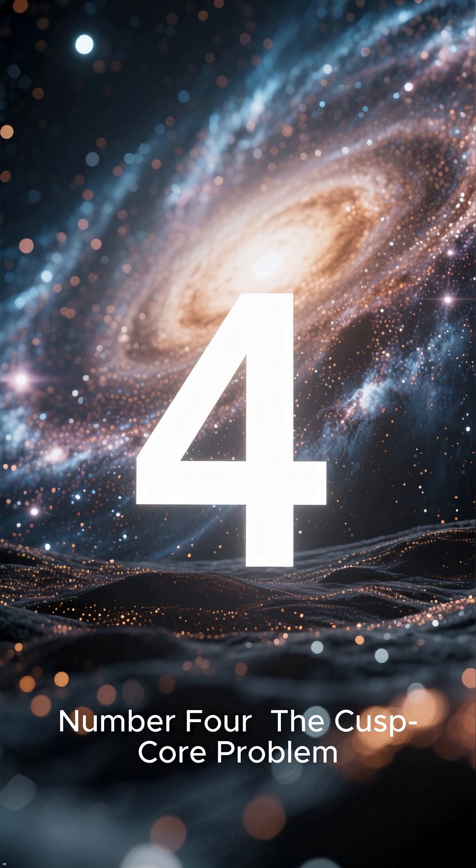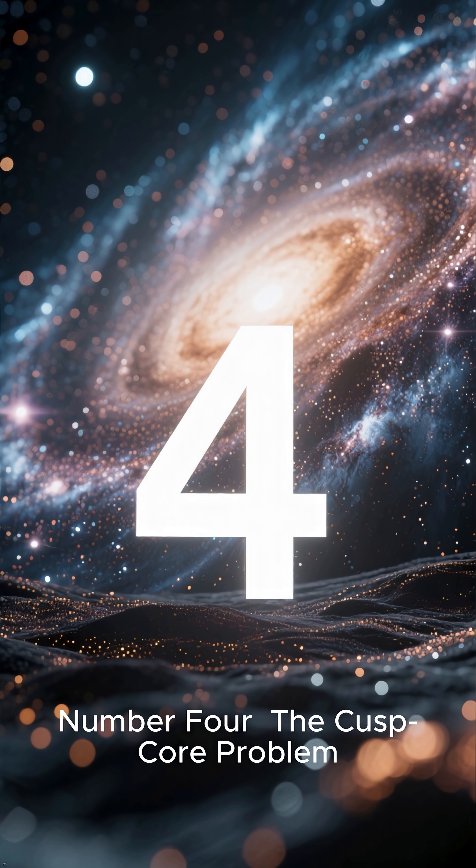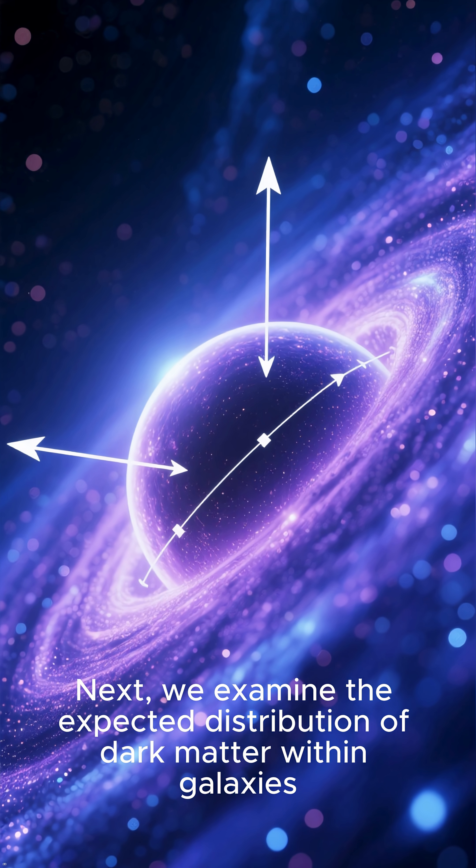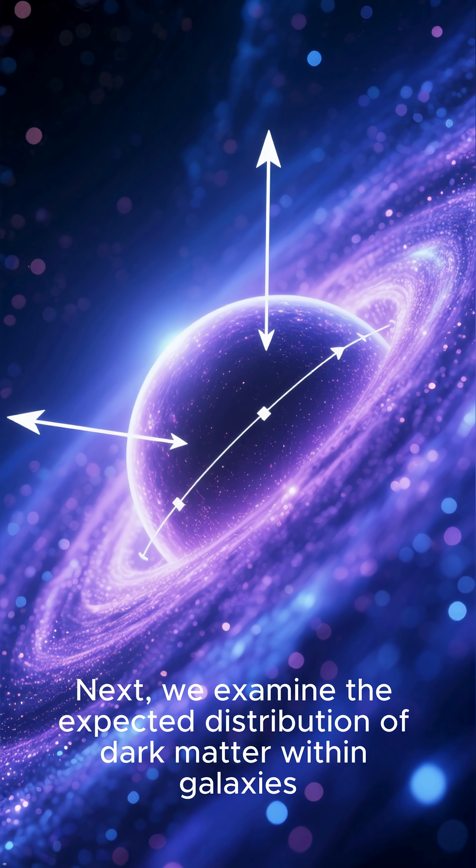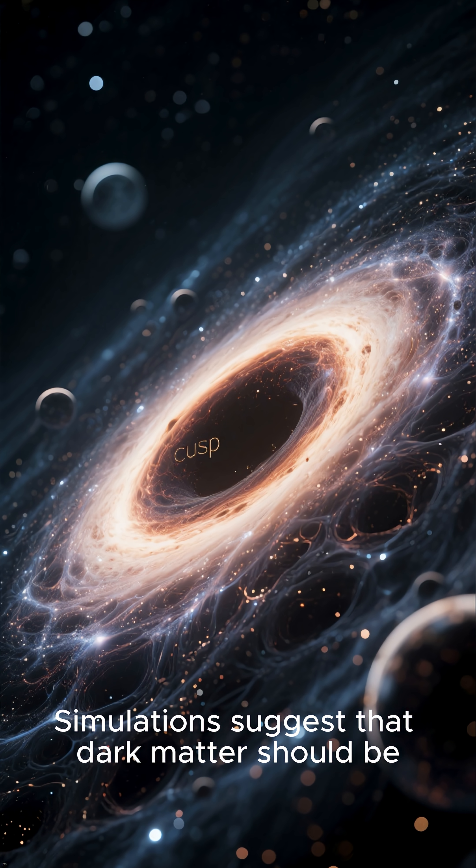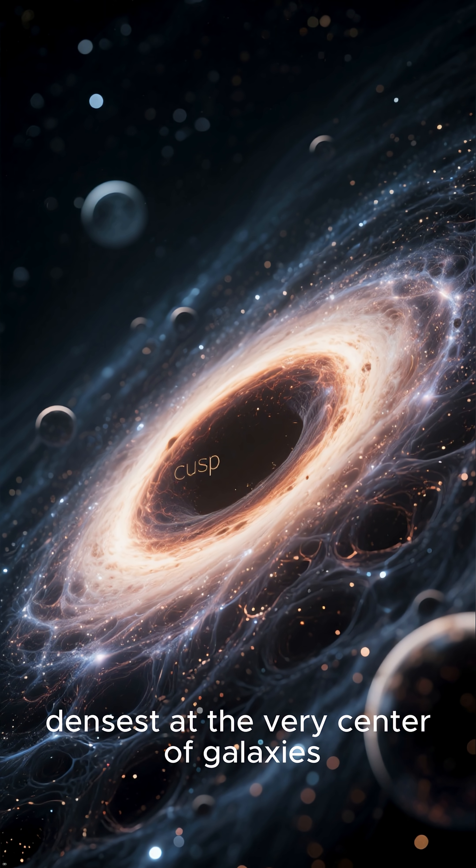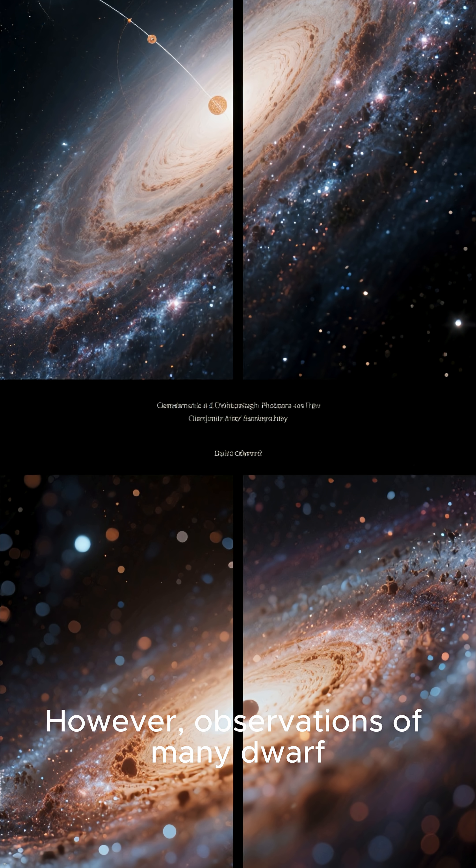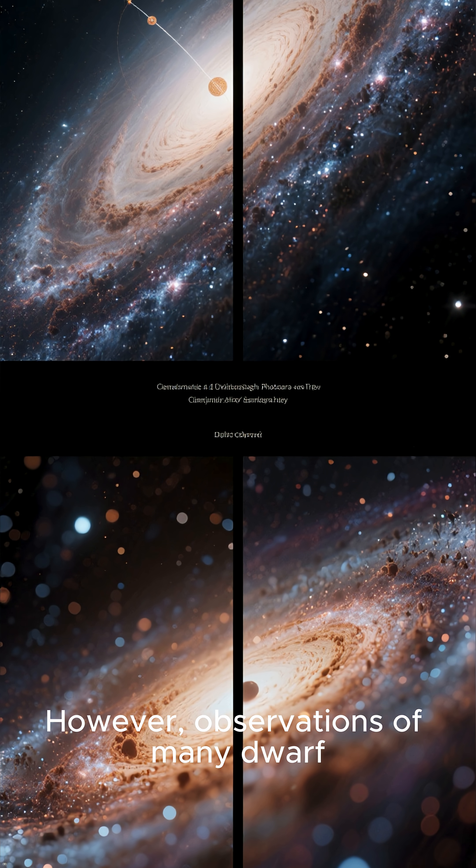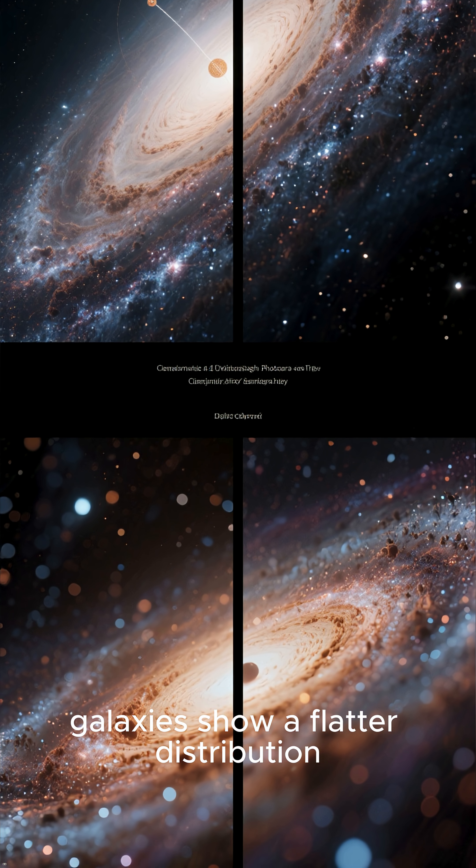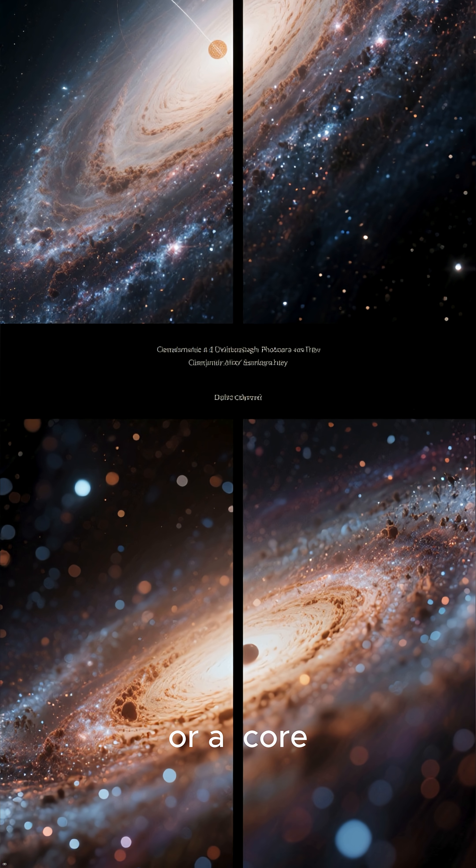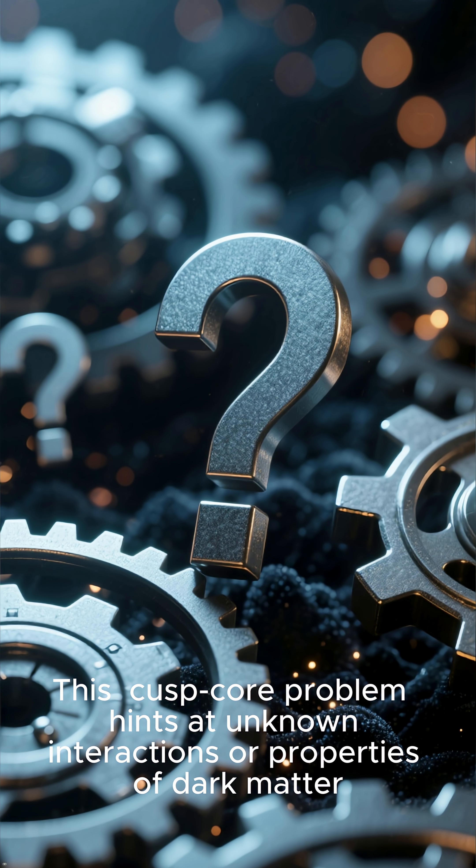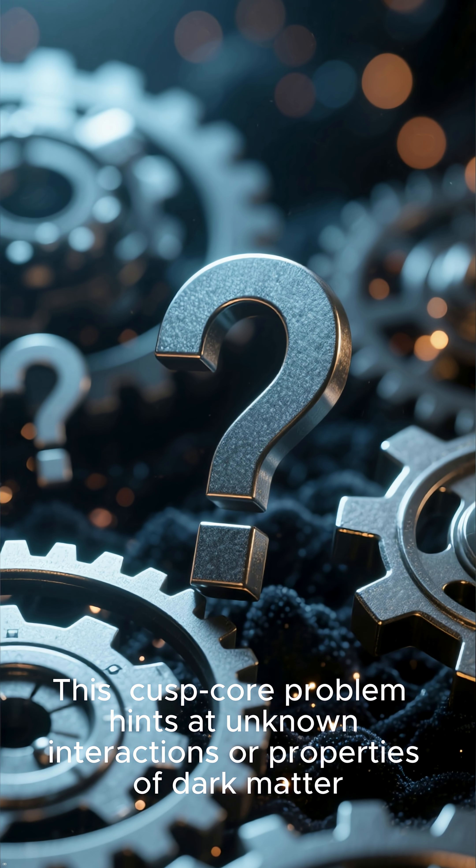Number 4: The Cusp Core Problem. Next, we examine the expected distribution of dark matter within galaxies. Simulations suggest that dark matter should be densest at the very center of galaxies, forming a cusp. However, observations of many dwarf galaxies show a flatter distribution, or a core. This cusp-core problem hints at unknown interactions or properties of dark matter.